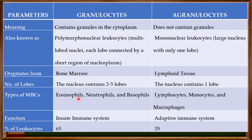In the granulocytes, the types are eosinophils, neutrophils, and basophils, and the agranulocytes contain lymphocytes, monocytes, and macrophages. Another important difference is function: granulocytes are an important component of the innate immune system, while agranulocytes — such as T cells and B cells — are components of the adaptive immune system. In terms of percentage, 65 percent of leukocytes are granulocytes and 35 percent are agranulocytes.